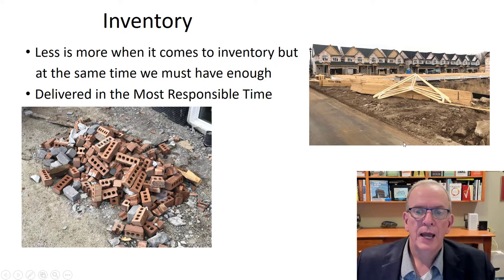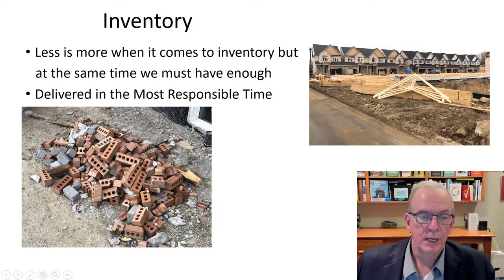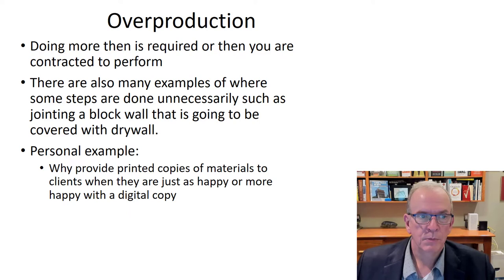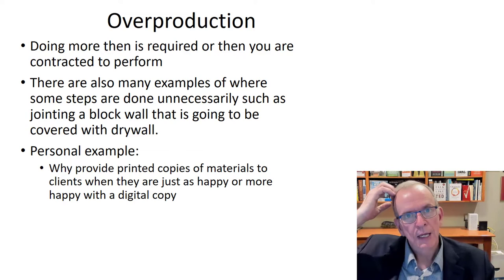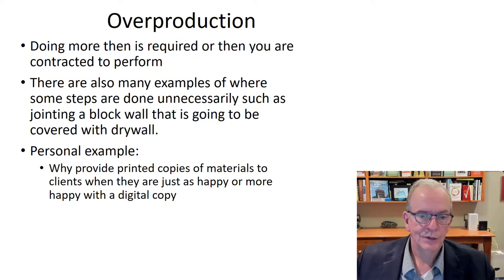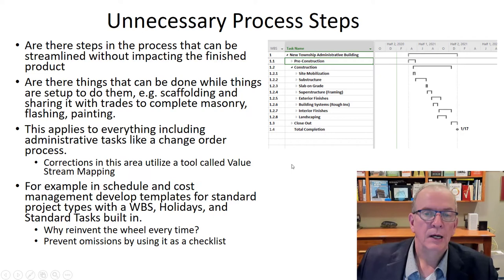Inventory: we don't want things way ahead of time. We want to schedule things close to the work at the most responsible time, not in the way of the work, and not ordering tons of extra materials that end up as waste. Overproduction: actually doing more than you need to do. For example, a plumbing subcontractor prefabbing shower supply lines with control valves makes four or five extras, and when they're done they throw them out — that's overproduction. Unnecessary process steps: making sure we have processes in place and don't do unnecessary steps.